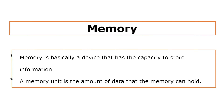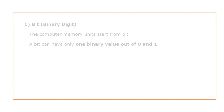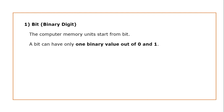Memory is basically a device that has the capacity to store the information. A memory unit is the amount of data that the memory can hold. Let's start from the very basic memory unit, and that is the bit, meaning binary digit.